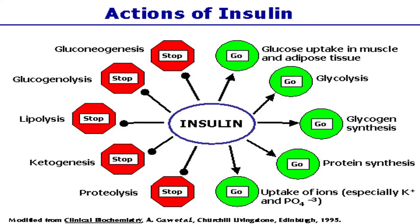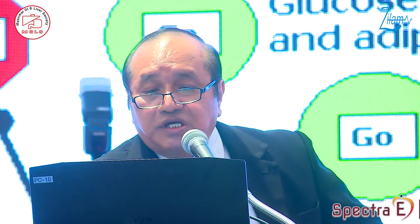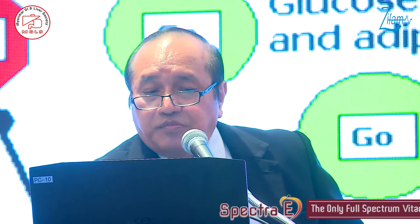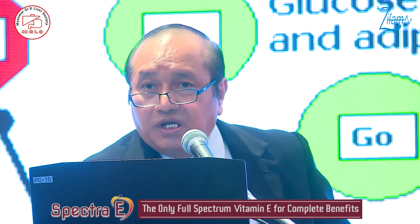Next, I would like to touch on insulin resistance. Insulin is a stimulatory for glucose uptake, glycolysis, glycogen synthesis, and protein synthesis, and it prevents gluconeogenesis, lipolysis, ketogenesis, and proteolysis.